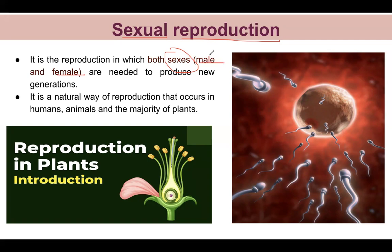Generally, we see here: we have male, who is represented by this symbol, and female by this symbol — these are scientific symbols you must be aware of. So these two sexes involved — it is called sexual reproduction. It is a natural way of reproduction, found in humans, animals, and in many plants.